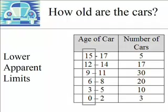When you look at the grouped frequency distribution, that leftmost column is talking about the age of cars — that is, what were the responses made. Some responses were 1 year old and some were 2 years old, and there were 3 of those cars. What you see boxed are 0, 3, 6, 9, 12, and 15 — those represent the lower apparent limits for each class interval.